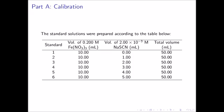The table listed here indicates the volume of the stock solutions that were used to prepare the standard solutions for the calibration. Recall that the concentration of the ferric nitrate solution was 0.200 molar and the concentration of the sodium thiocyanate solution was 2.00 times 10 to the negative 3 molar. The total volume for each solution was 50 milliliters. The volume of ferric nitrate for each solution was 10 milliliters. The volume of the sodium thiocyanate changed from 0 milliliters in the first standard up to 5 milliliters in the sixth standard.